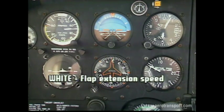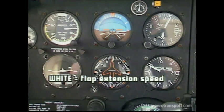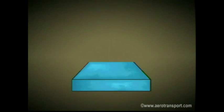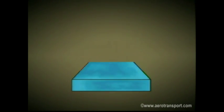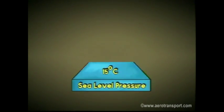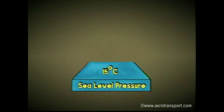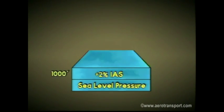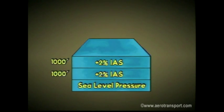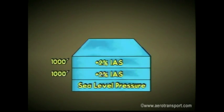The fourth marking is white and indicates speeds at which fully extended flaps may be used. Errors in the airspeed readings may be caused by a variety of factors and will have to be corrected. As air density varies, so will the margin of error. The standard for calibrating this instrument is normal sea level pressure at 15 degrees Celsius. A good rule of thumb to remember is: for every 1,000 feet of pressure altitude, add 2% to the indicated airspeed.